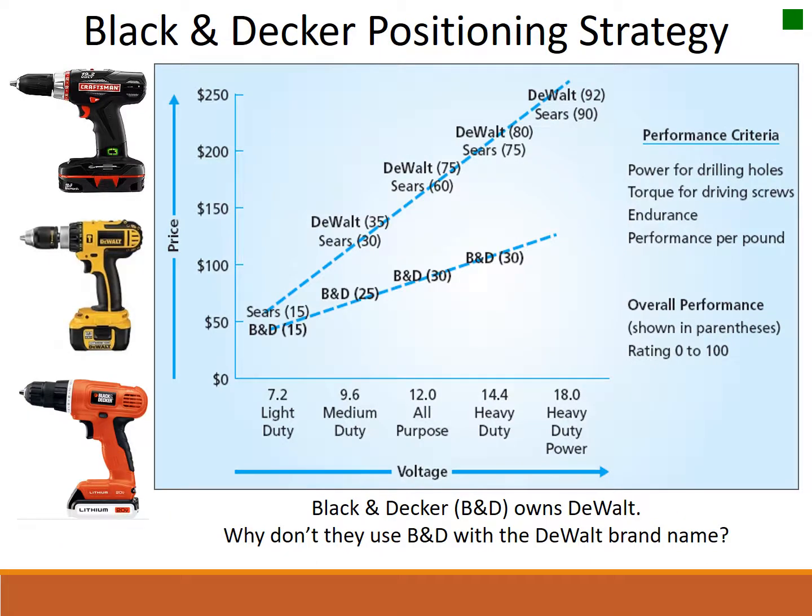Here's another example with Black & Decker and DeWalt. Black & Decker owns DeWalt; however, they have products side-by-side in most hardware stores. Even though they compete with each other, different market segments are motivated for different reasons. There's a segment in the tool trade for lower-cost, lesser-performing products at lower price points, and then a separate segment of consumers who would rather pay more for better quality and better performance.